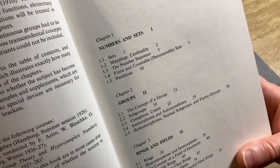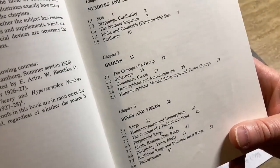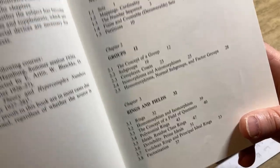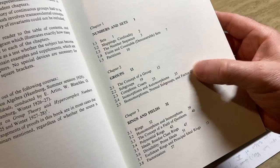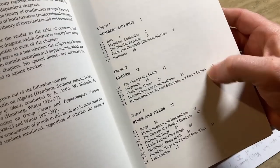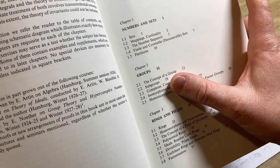It starts with numbers and sets. Then it goes on to groups, and then rings and fields. It's pretty quick, right? Look at the page numbers here: 12, 28. I mean that's groups, page 12 to page 28. That's all of groups.